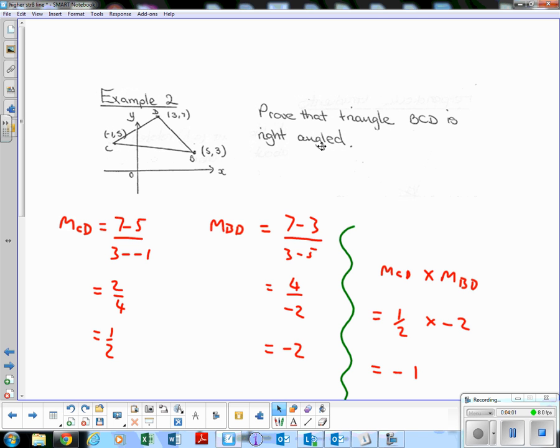Prove that BCD is right angled. So quick sketch, BCD. This one looks like the most likely angle to be right angled, so we'll have a look at this one. So if I can find the gradient of CD and the gradient of BD, multiply them together and get negative 1, then I'm proving that they are right angled, because we know that M1 times M2 equals negative 1 for perpendicular gradients.